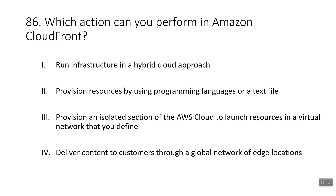Question eighty-six: which action can you perform in Amazon CloudFront? The answer is delivering content to customers through a global network of edge locations. Running infrastructure in a hybrid cloud platform is performed by AWS Outposts. Provisioning resources using programming languages or text files is related to AWS CloudFormation. Provisioning an isolated section of the AWS Cloud to launch resources in a virtual network is related to Amazon VPC.